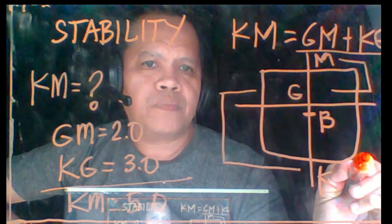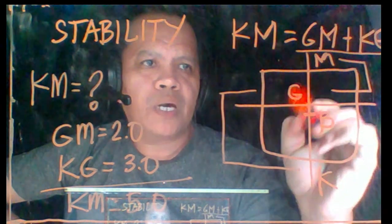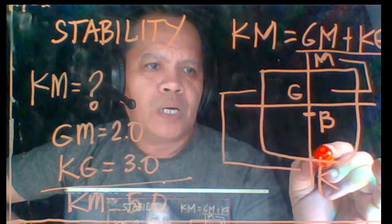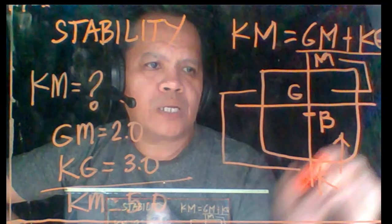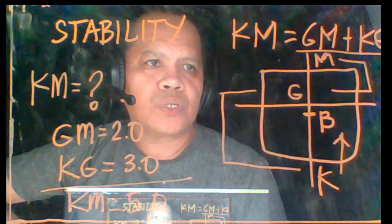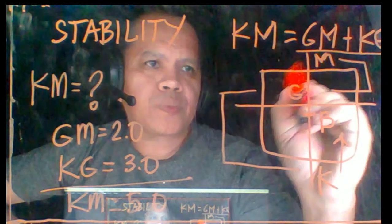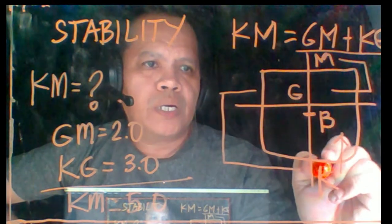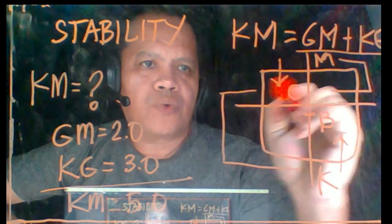You have your KG and GM. KB is the upward force, that is the upward force, and the GM is your downward force.